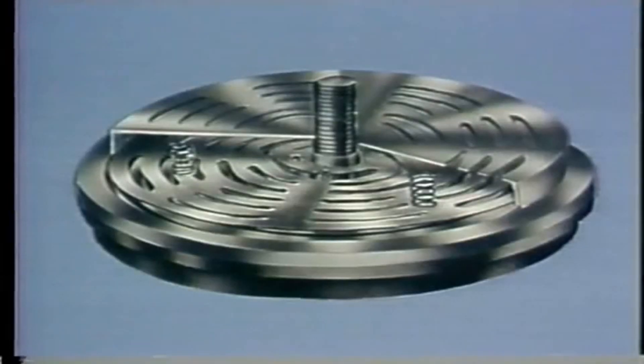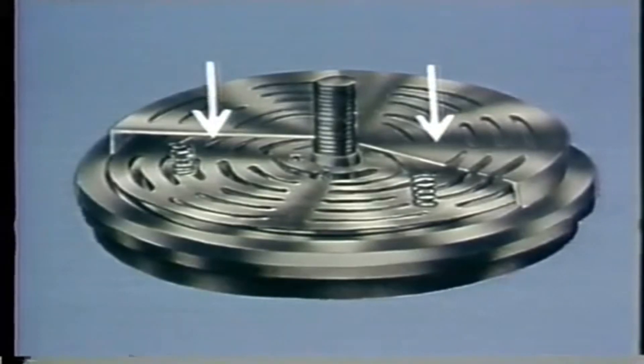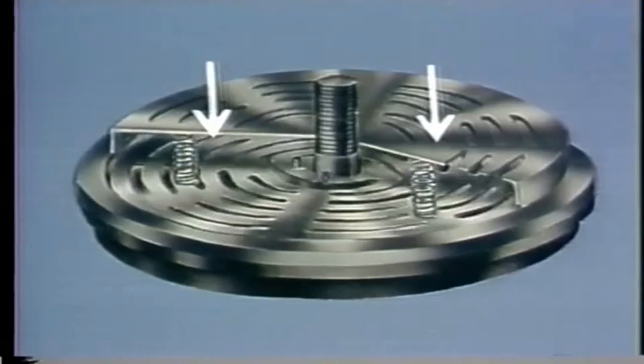After the compressed air in the cylinder escapes, the combination of the pressure in the discharge piping and spring tension is great enough to overcome air pressure in the cylinder. This causes the valve plate to shut, closing off any backflow of compressed air from the discharge piping.